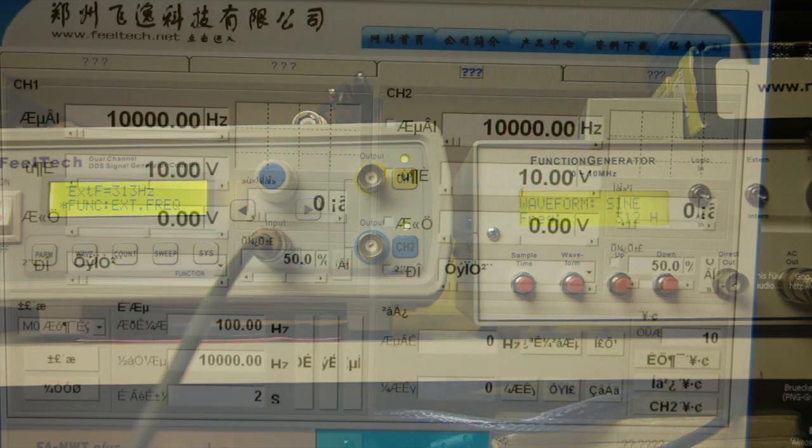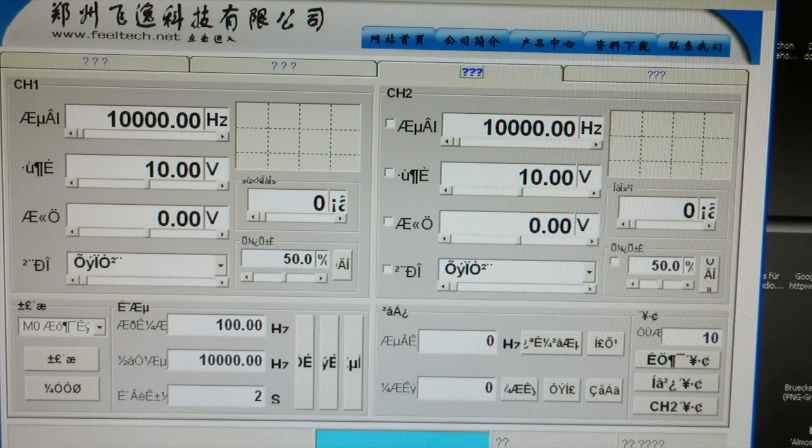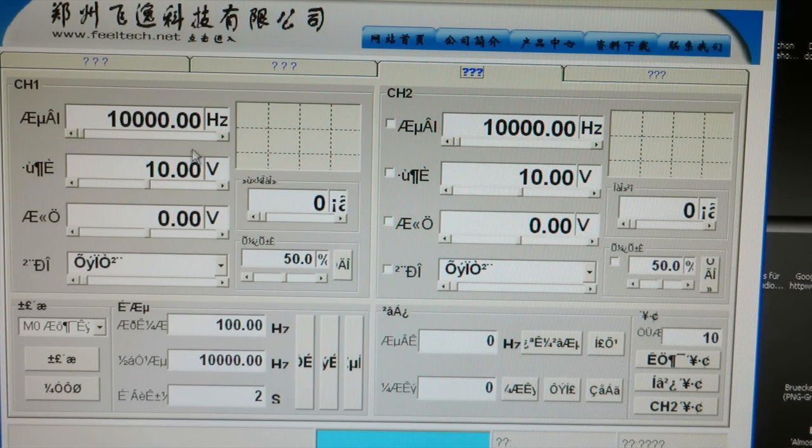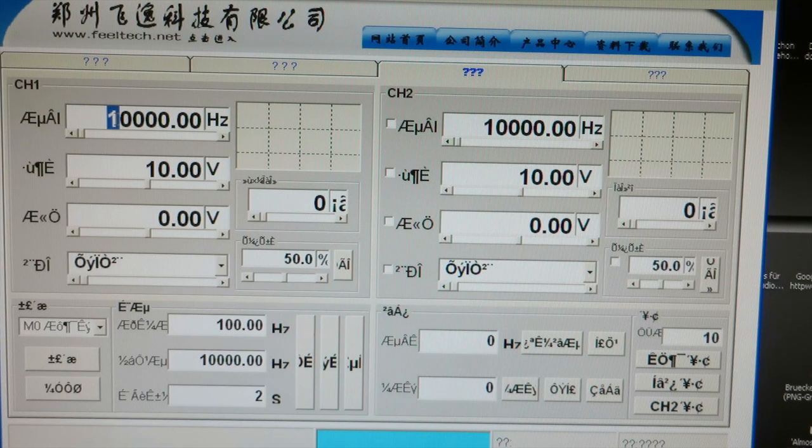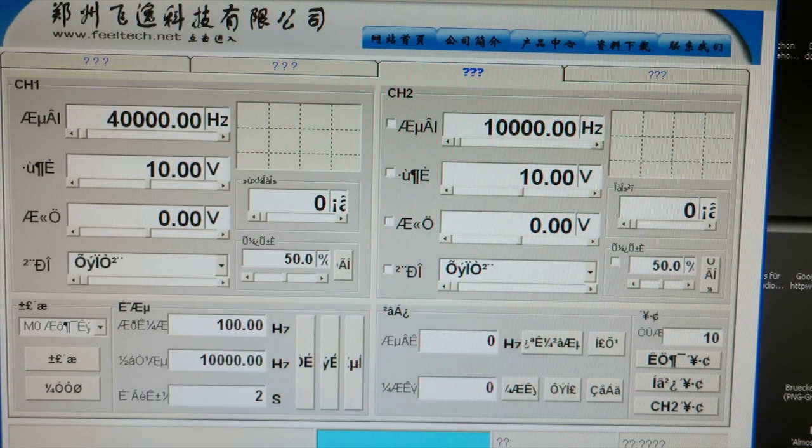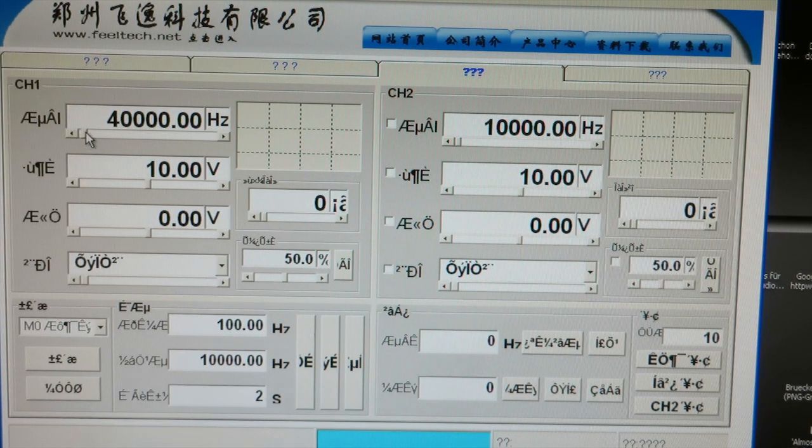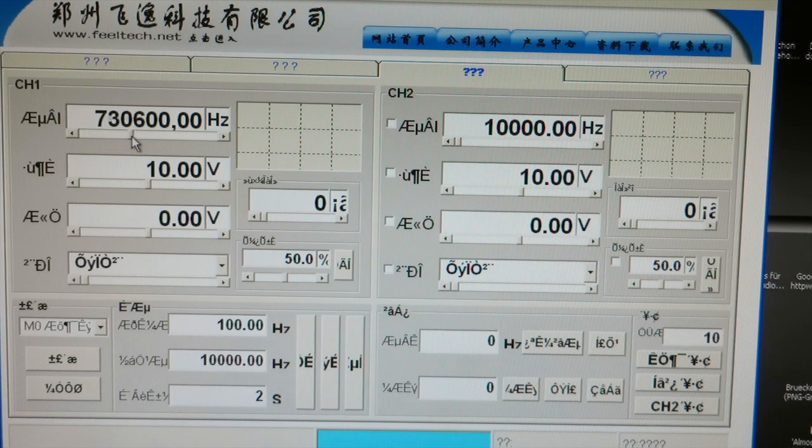Last thing to show is the software which is fully in Chinese language but usable anyway. You can change the frequency of channel 1 here by entering the value or sliding the slider.